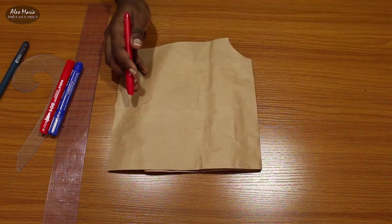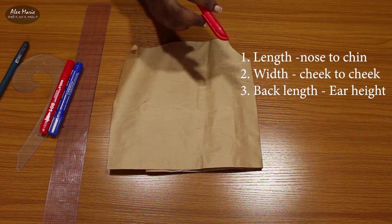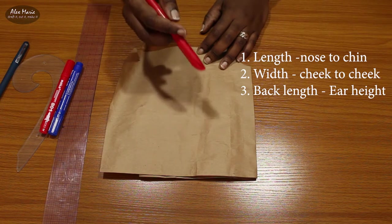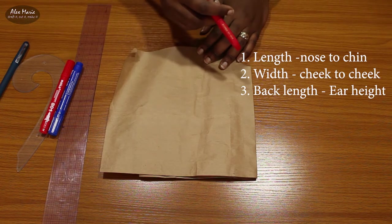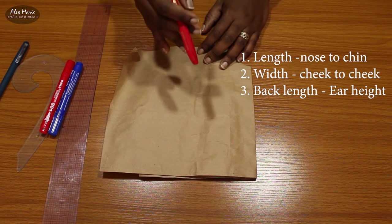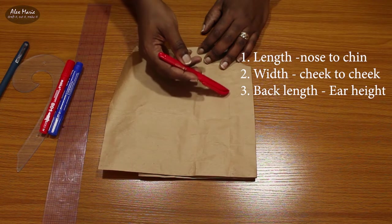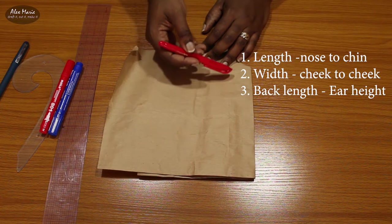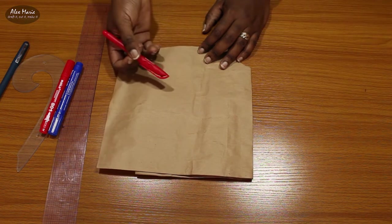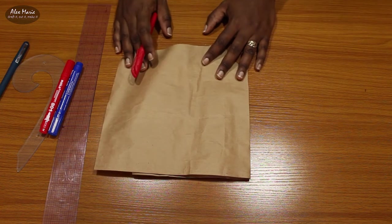Now I'm actually going to show you how to draft your own using your own measurements. These are the measurements you're going to need: the first one is from your nose to your chin, the second one is ear to ear or cheek to cheek however wide you want it, and the last one is the height of the face mask at your ear. You can use your ear as a guide, one inch, two inches, two and a half, two and a quarter at the most.